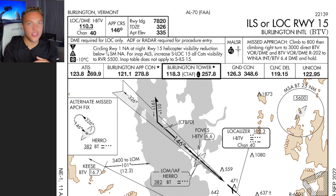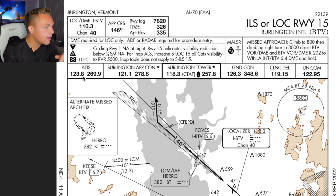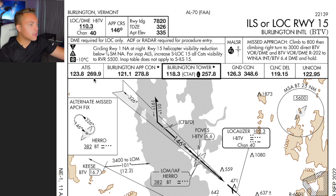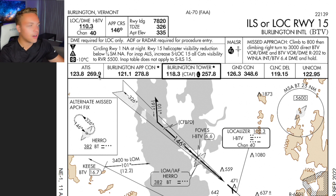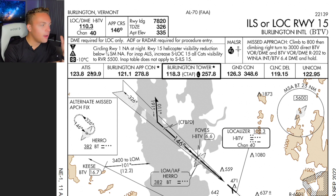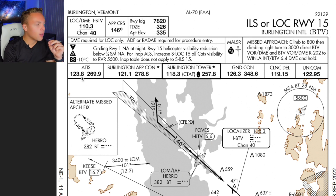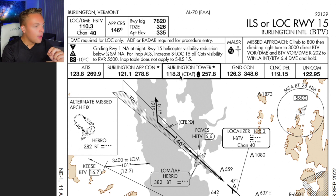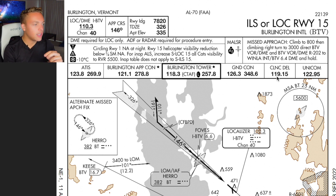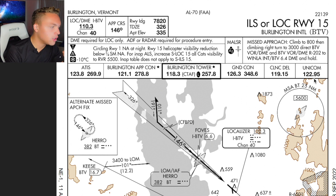The ATIS — weather and airport information — is on frequency 123.8. Burlington approach control is on 121.1. Burlington tower is on 118.3. Ground control is on 126.3, clearance delivery is on 119.15, and the UNICOM is 122.9.